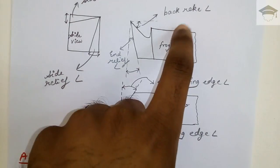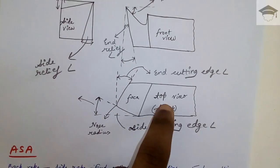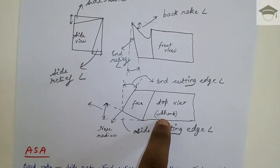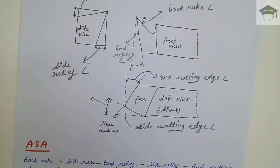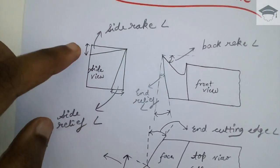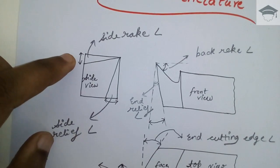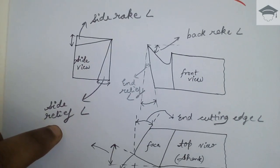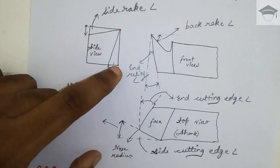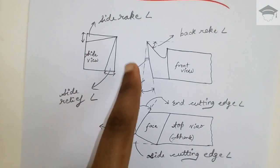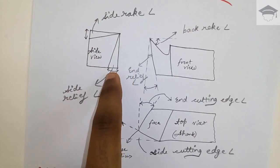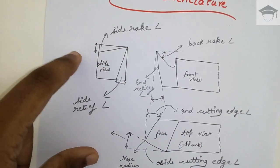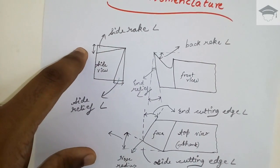This portion that you see from the top is known as the shank. Here, this is the side rake angle, and this is the side relief angle. The angle that is formed here is known as side relief, and this is known as side rake.